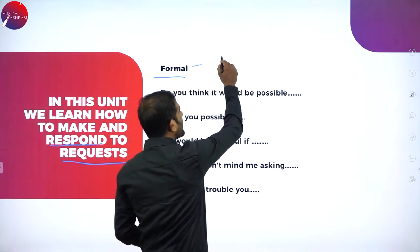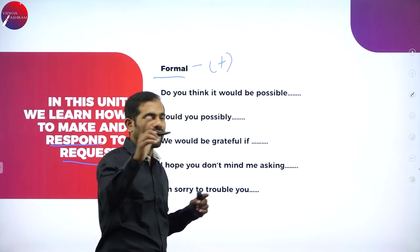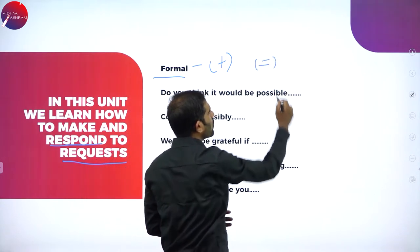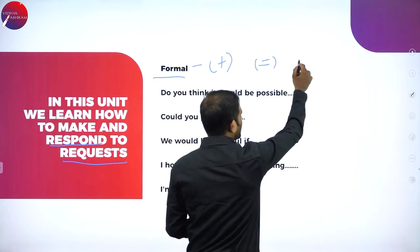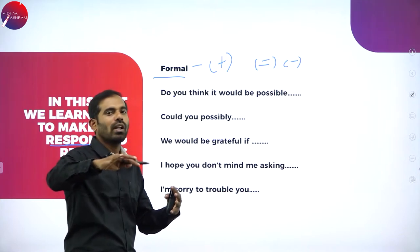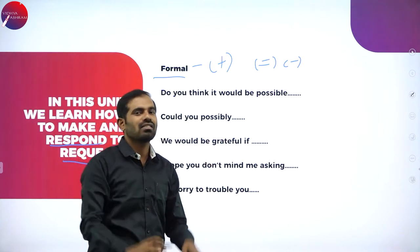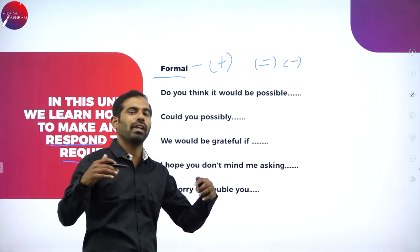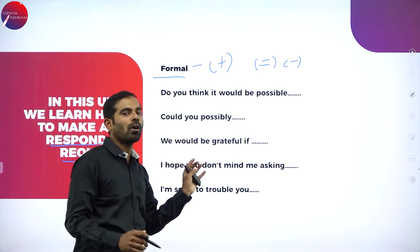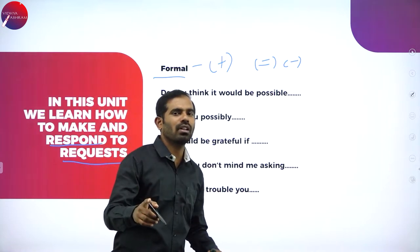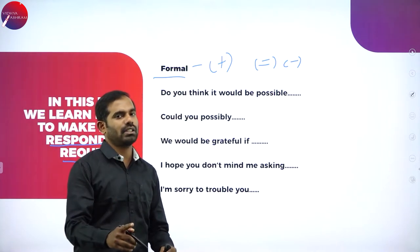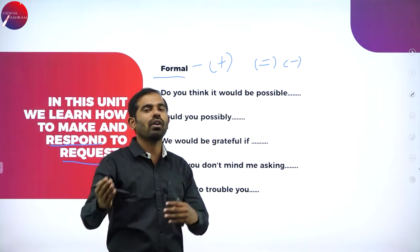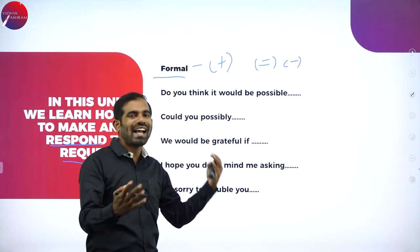First, let us see how we make requests using formal words. When I say formal, you speak to your authorities. Informal would be with your subordinates, colleagues, or anybody equal. Let us concentrate on formal language: 'Do you think it would be possible for you to complete this project?' — formal, spoken by somebody higher than you.